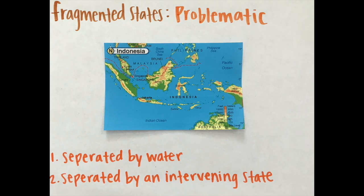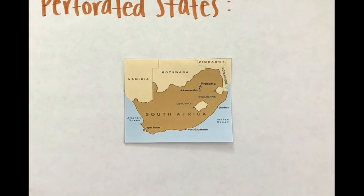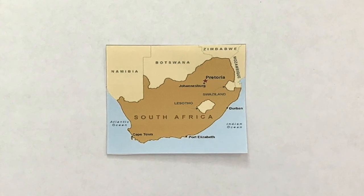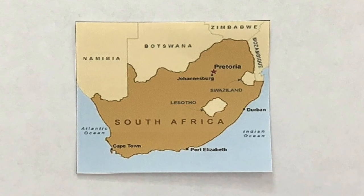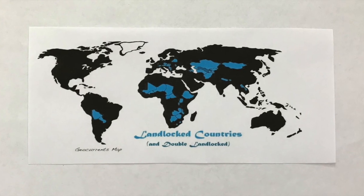A fragmented state, such as Indonesia, includes several discontinuous pieces of territory. There are two kinds of fragmented states: those separated by water and those separated by an intervening state. Both may face problems and costs associated with communications and maintaining national unity. South Africa is a perforated state, which is a state that completely surrounds another state; the surrounded state may face problems of dependence on or interference from the surrounding state. Landlocked states lack a direct outlet to a sea because they are completely surrounded by several other countries.